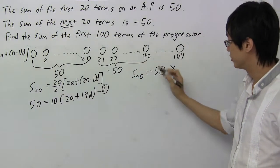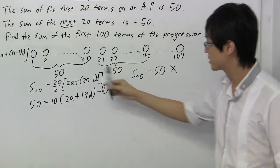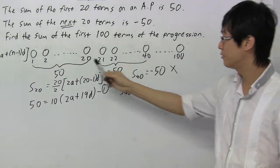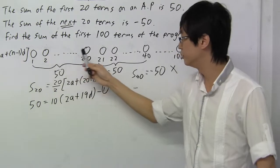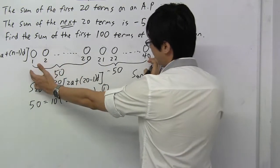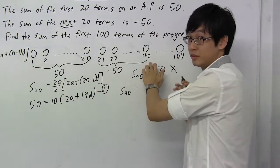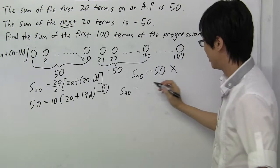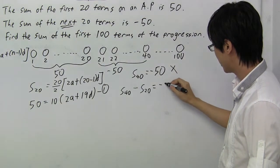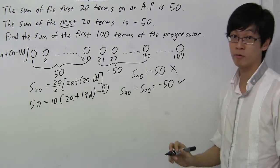And so what should we do? We should actually put S40, summing from here to here, minus the way summing from here to here. Because summing from here to here minus the way from here to here, I'll get here to here. And so S40 minus S20, I'll get minus 50. This should be the correct way.